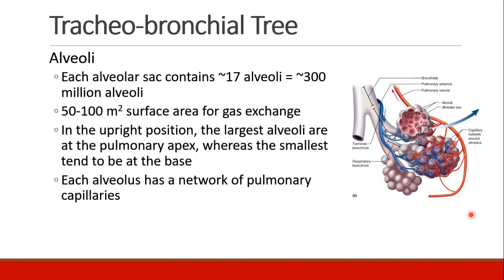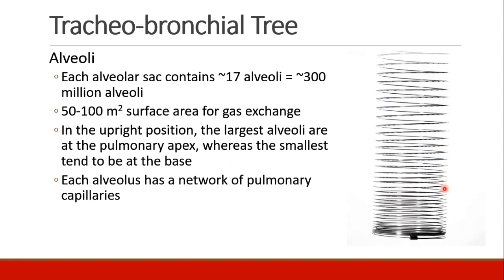The alveoli are at the end of the tracheal-bronchial tree. Each sac contains about 17 alveoli, for a total of about 300 million alveoli in the lungs. Opened up flat, they would make a surface area of 50 to 100 square meters for gas exchange. When a patient is upright, the largest alveoli are at the pulmonary apex and the smallest tend to be at the base. We can think of the lungs as suspended from the top of the thoracic cavity, like a slinky, so the alveoli at the top are most open while those at the bottom tend to be smaller.